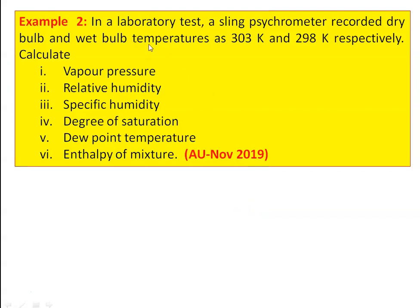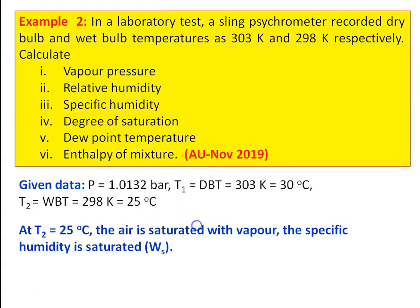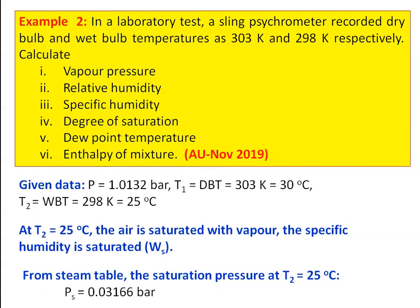Next problem: In a laboratory test, a sling psychrometer records dry bulb temperature and wet bulb temperature as 303 K and 298 K respectively. Calculate the vapor pressure, relative humidity, specific humidity, degree of saturation, dew point temperature, and enthalpy of the mixture. This is from the November 2009 question paper. Pressure is 1.0132 bar, T1 = 303 K = 30°C, T2 = 298 K = 25°C. At 25°C, the air is saturated; from the steam table, Ps = 0.03166 bar.